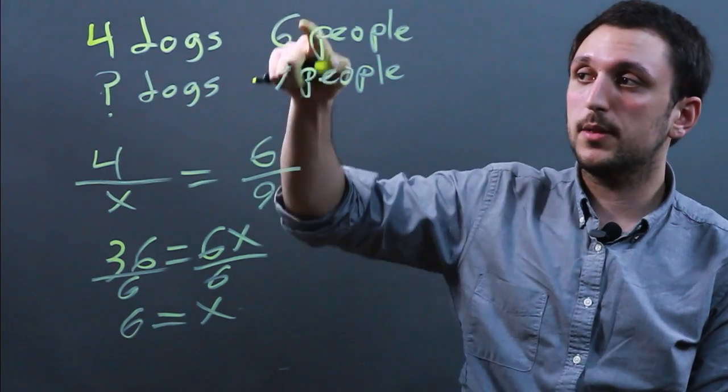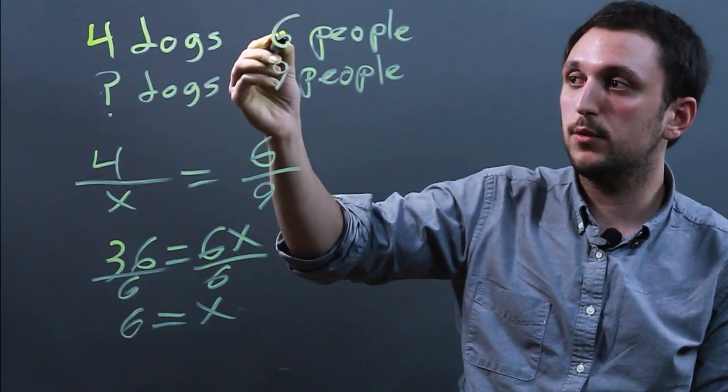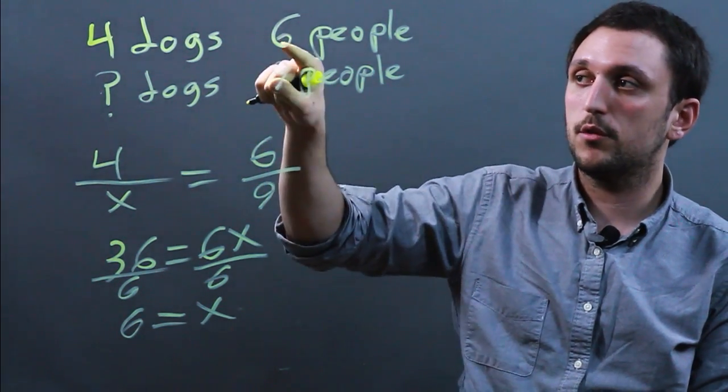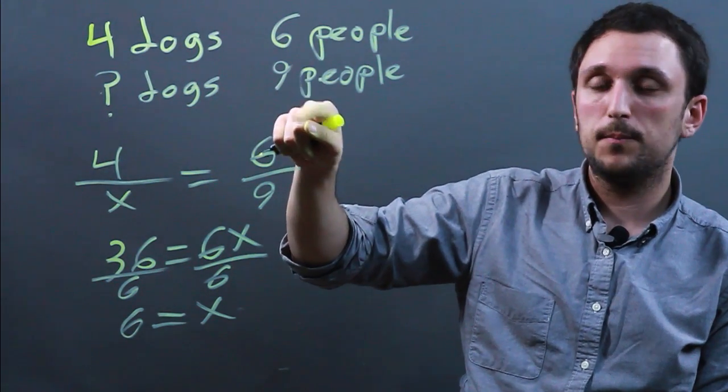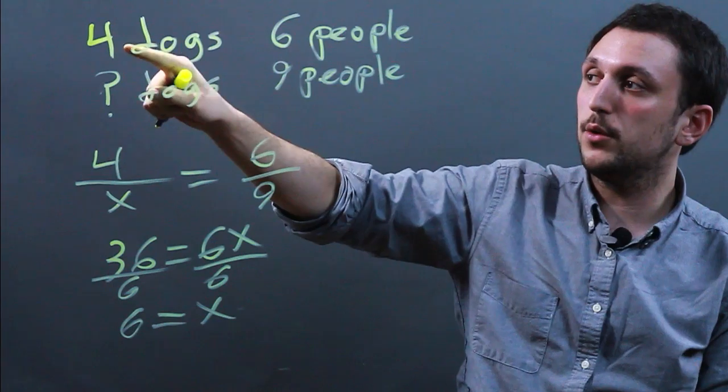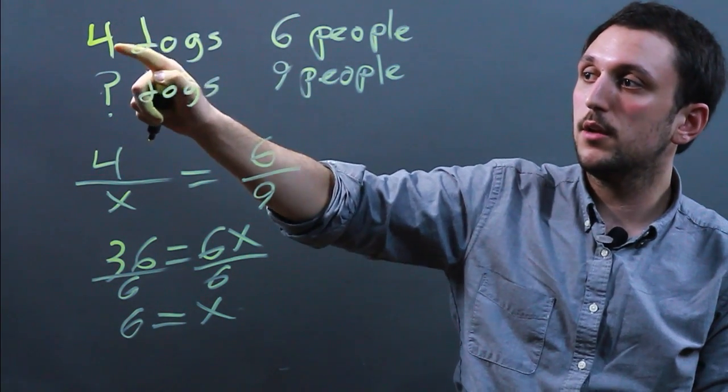Now one thing about this proportion is you can simplify. If you have six to nine, you could also just say two to three. Or rather, if you have four to six, you can say two to three.